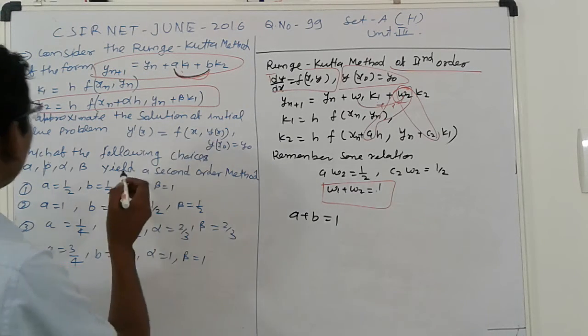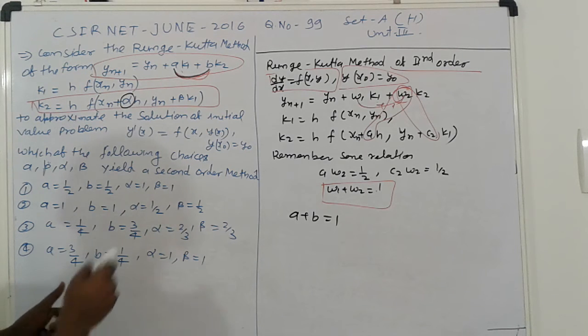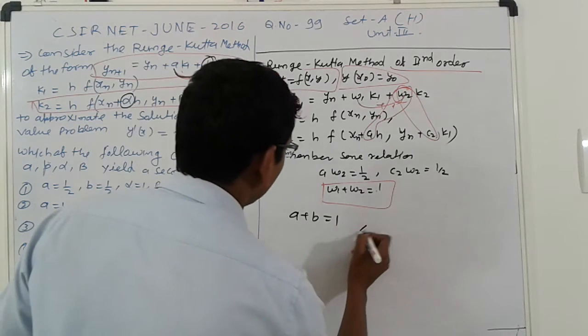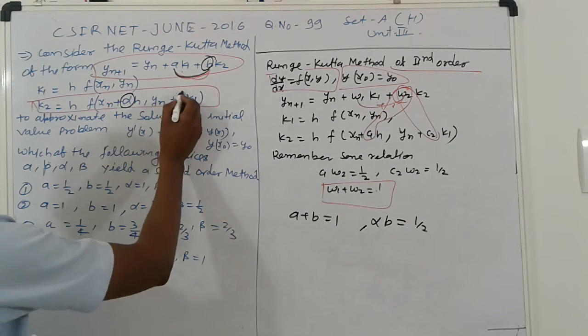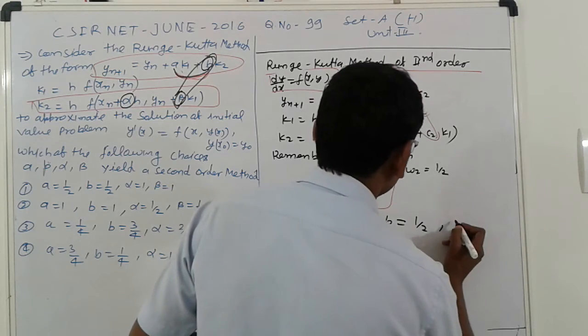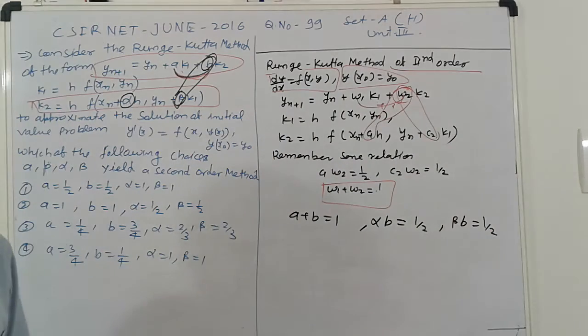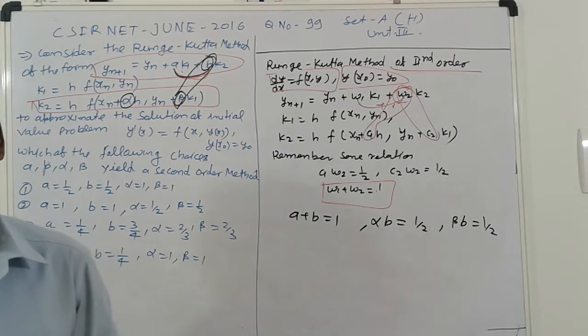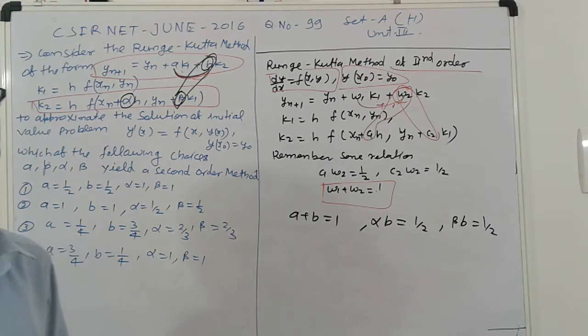Next, coefficient of h here alpha. And product of coefficient of k_2 means alpha*b. Alpha*b equals 1/2. Next, beta and b. We get beta*b equals 1/2. That relation which is a relation create. Now next work, if the relation create, next what is your work? Go to the option and check one by one.